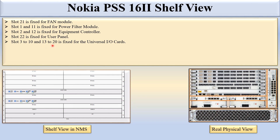Slot 3 to 10 and slot 13 to 20 are fixed for the universal input/output card. You can see here slot 3 to slot 10 and slot 13 to slot 20 in the real physical view. These slots are fixed for the universal input/output cards, and these slots are half-height slots.